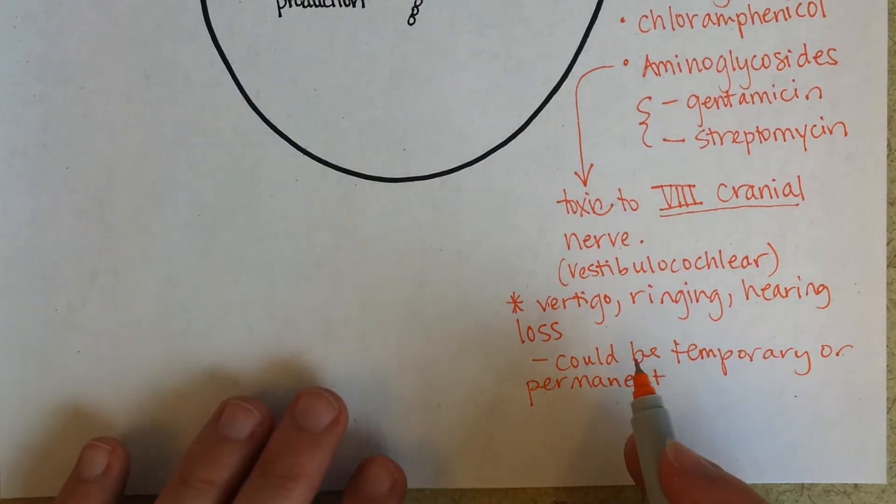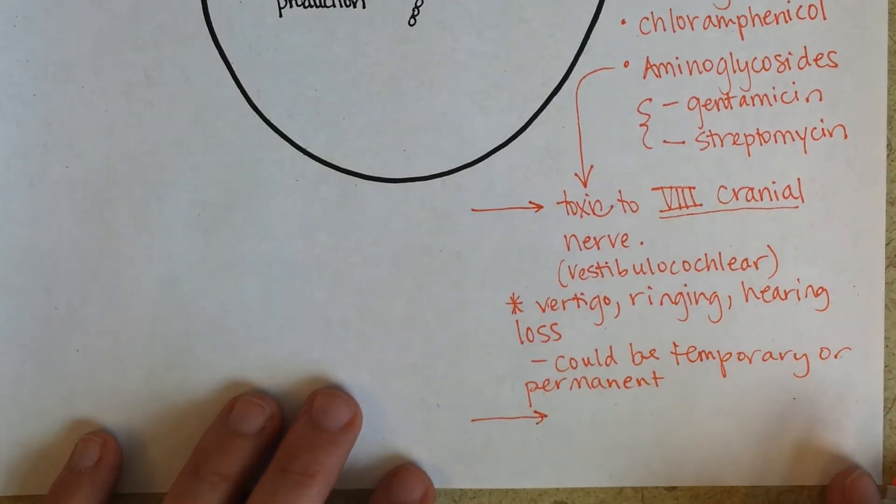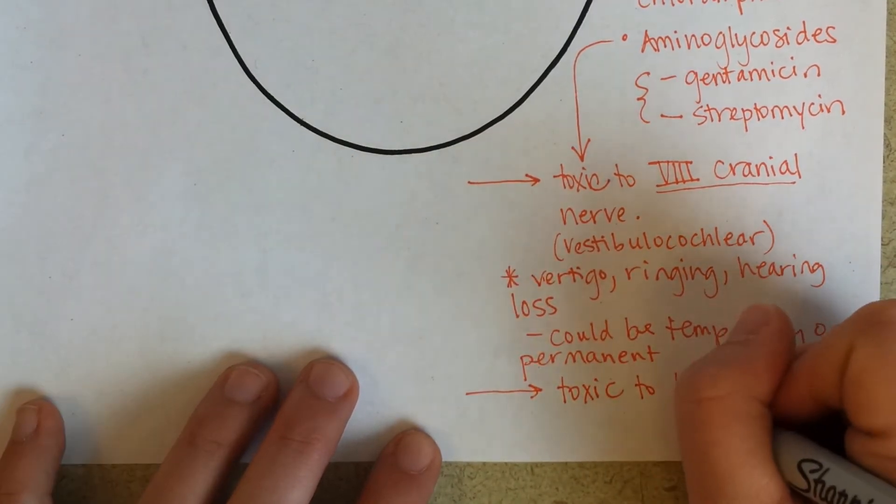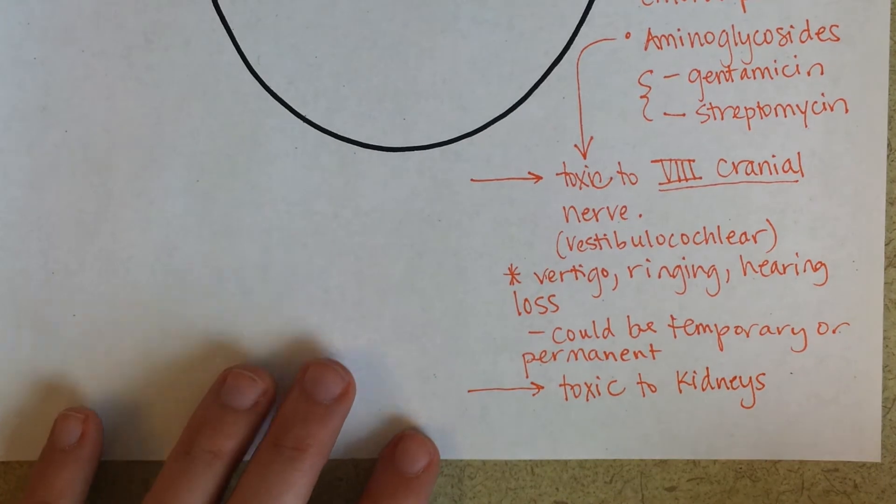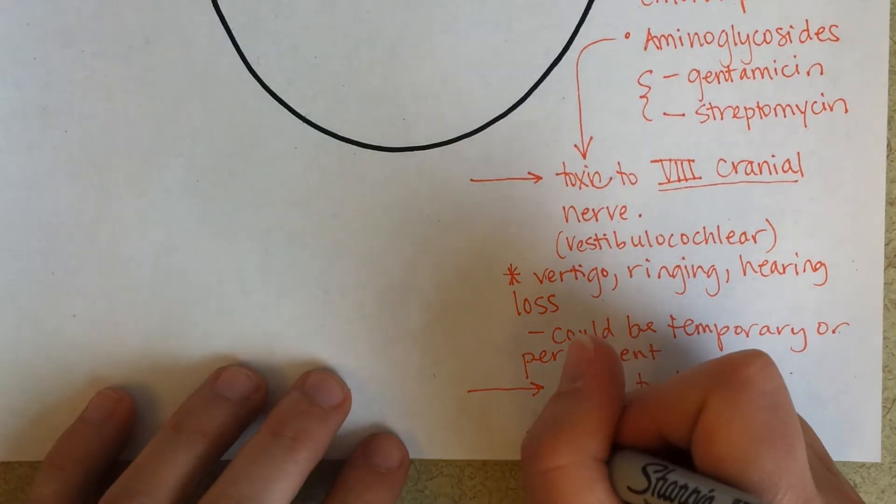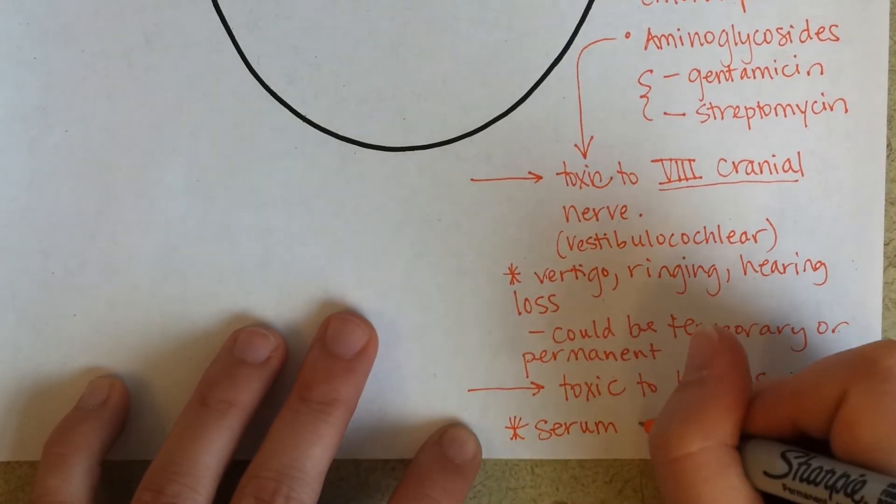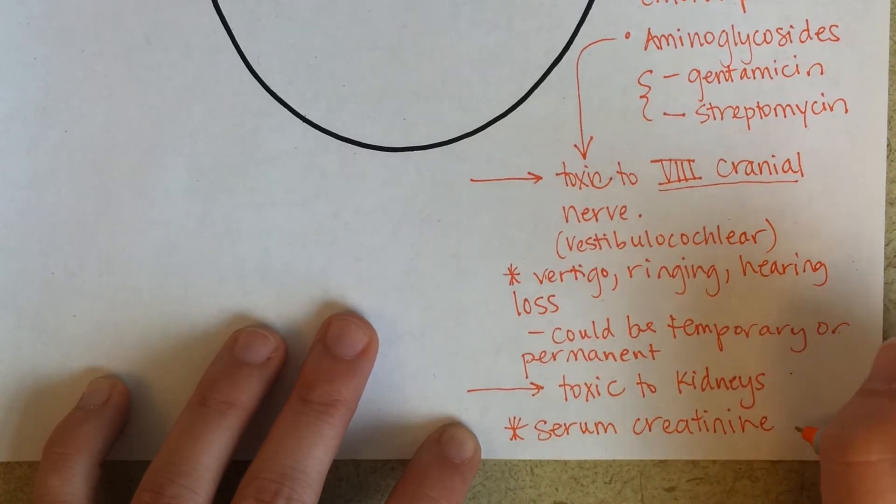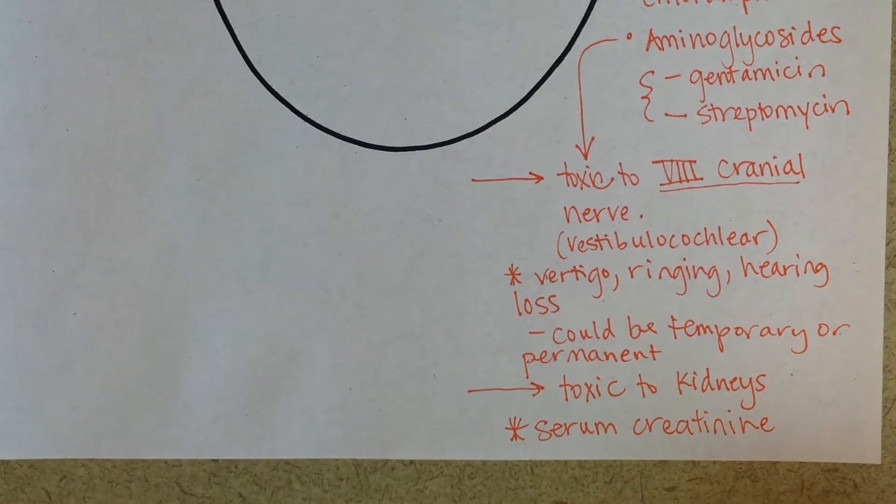It's also—so that's one thing, it's toxic to the eighth cranial nerve—its toxicity also shows its effects on the kidneys. And for that reason, any nurse that is taking care of a patient that's on aminoglycoside antibiotics should be very careful to check, as the lab values come in, what the serum creatinine level is of that patient. Because if serum creatinine levels start to go up, then that's a sign that the kidneys are no longer filtering as they should and that they could be affected by the toxicity of that aminoglycoside.